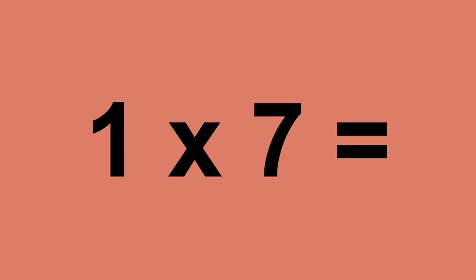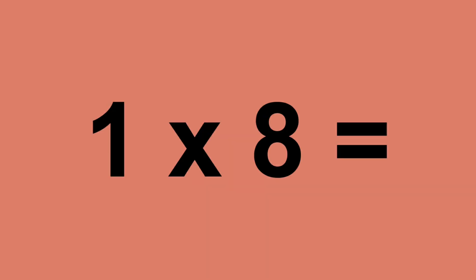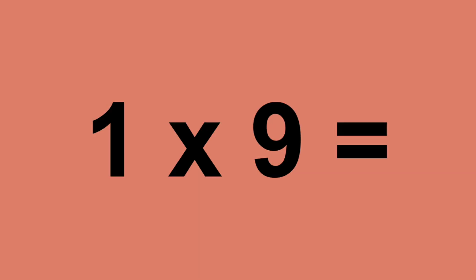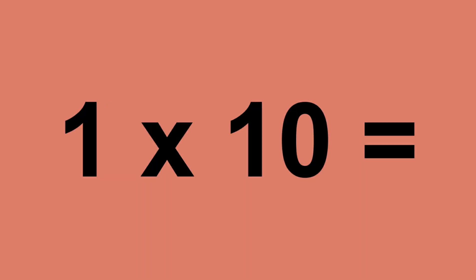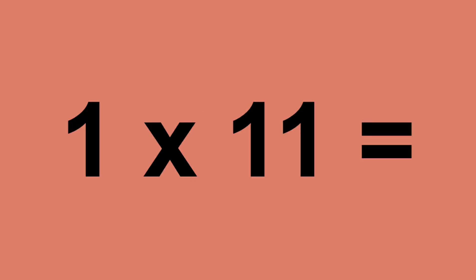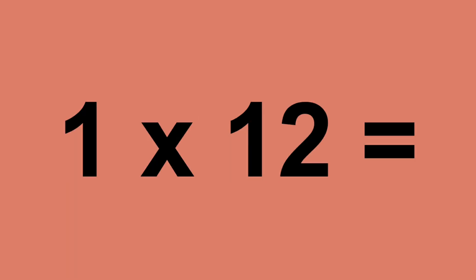One times five equals five. One times six equals six. One times seven equals seven. One times eight equals eight. One times nine equals nine. One times ten equals ten. One times eleven equals eleven. One times twelve equals twelve.